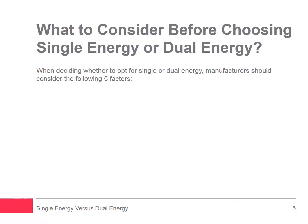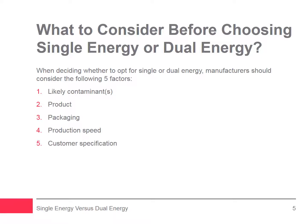When deciding whether to opt for single energy or dual energy x-ray inspection technology, manufacturers should consider five factors: one, likely contaminants; two, product; three, packaging; four, production speed; and five, customer specification.